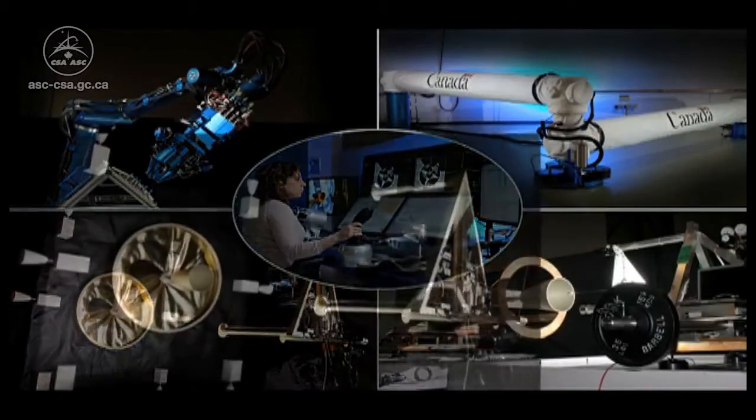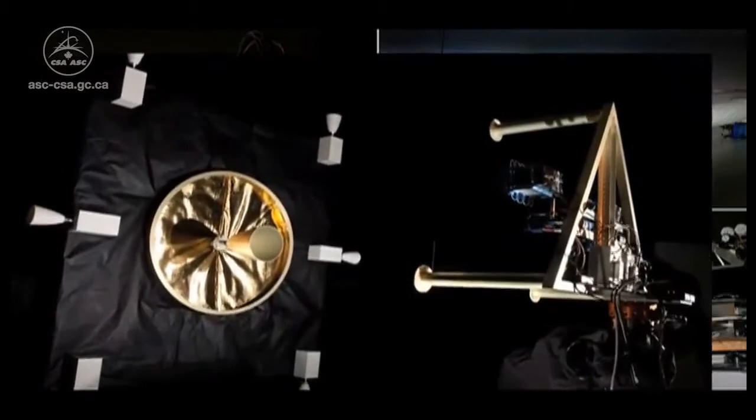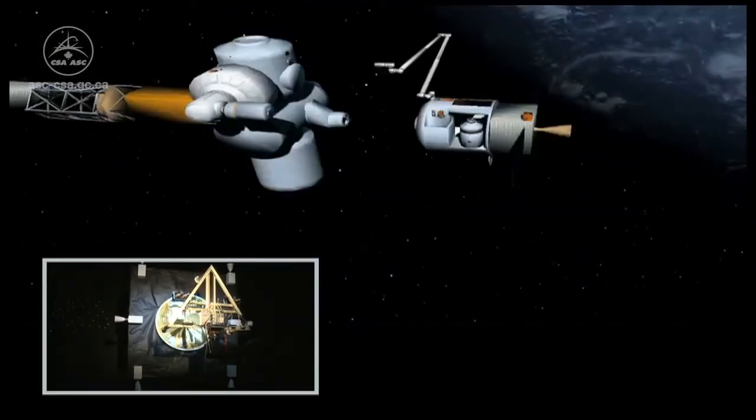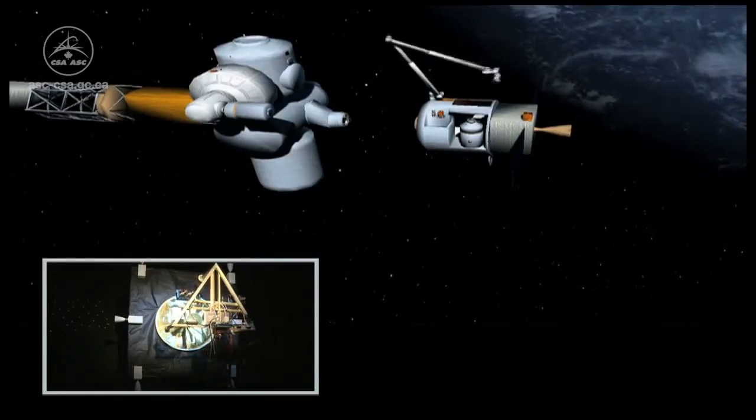Once the precision robotic servicing tasks to refuel and replace parts on the spacecraft are complete, the spacecraft can undock and move to the next satellite that requires servicing.